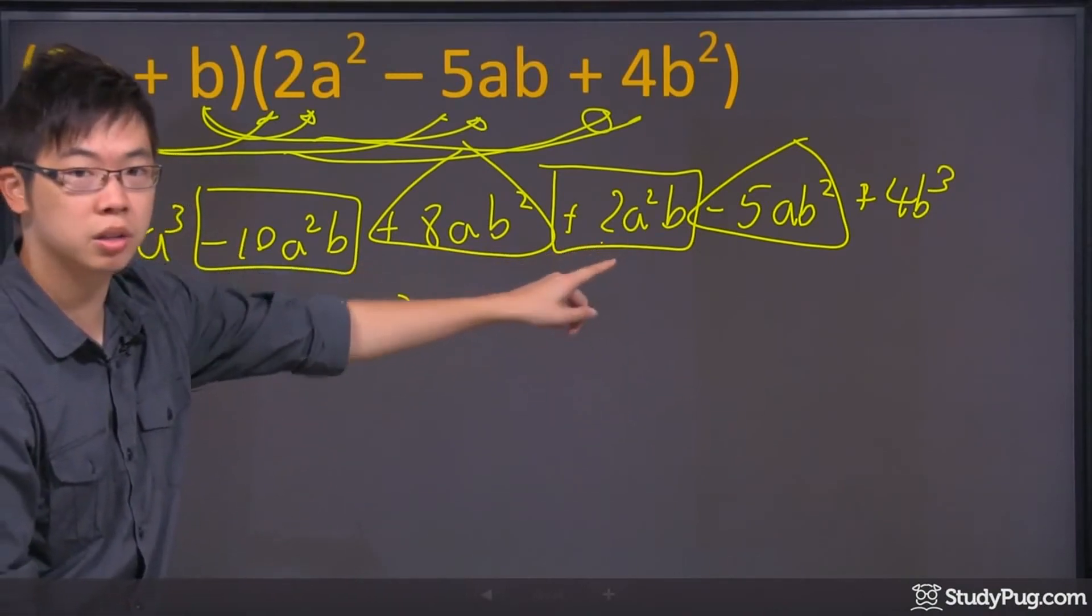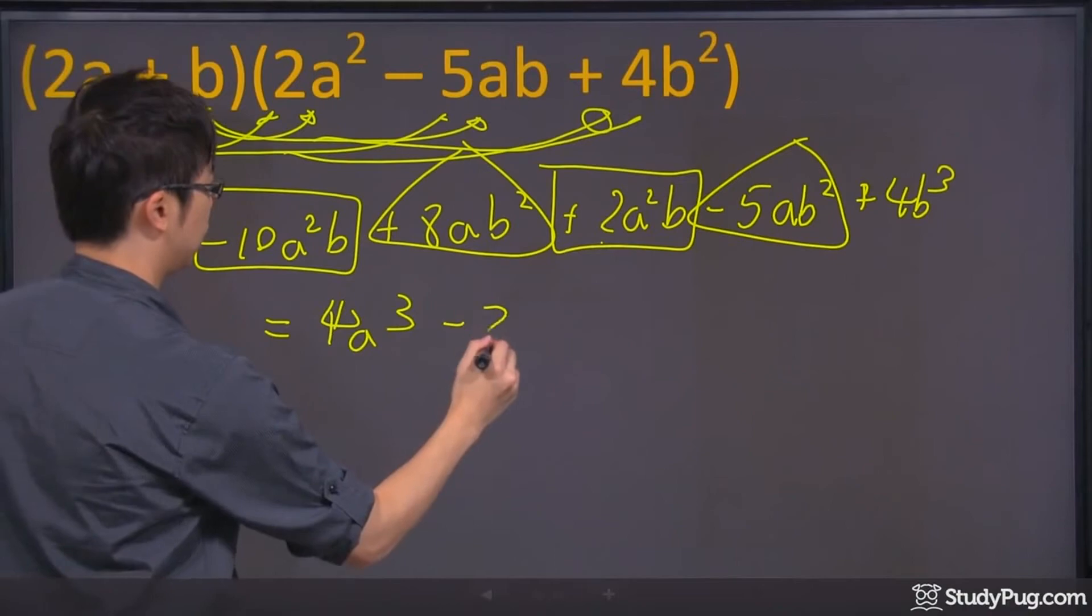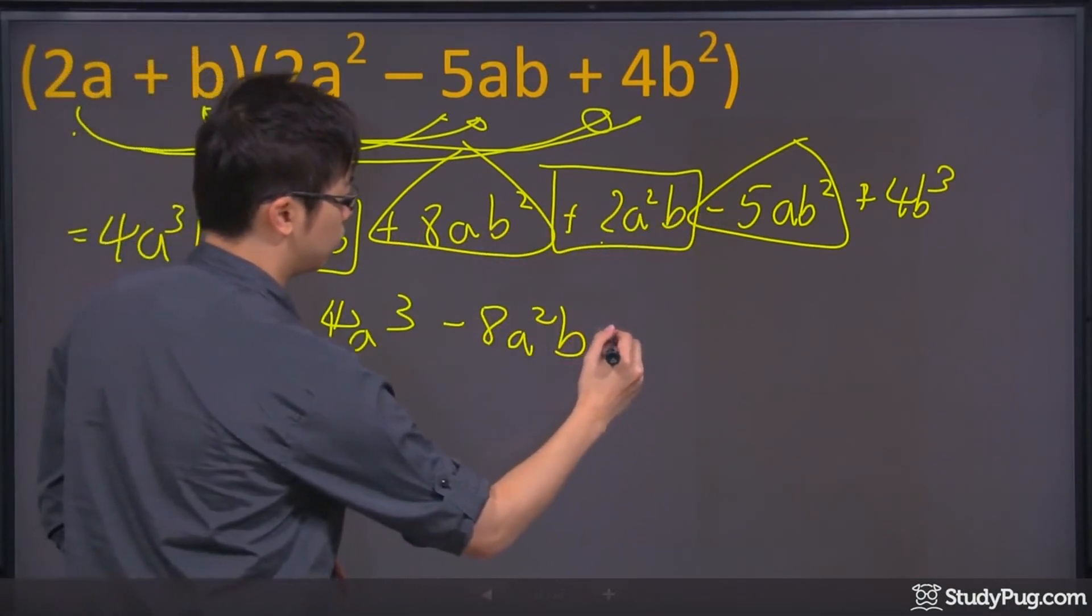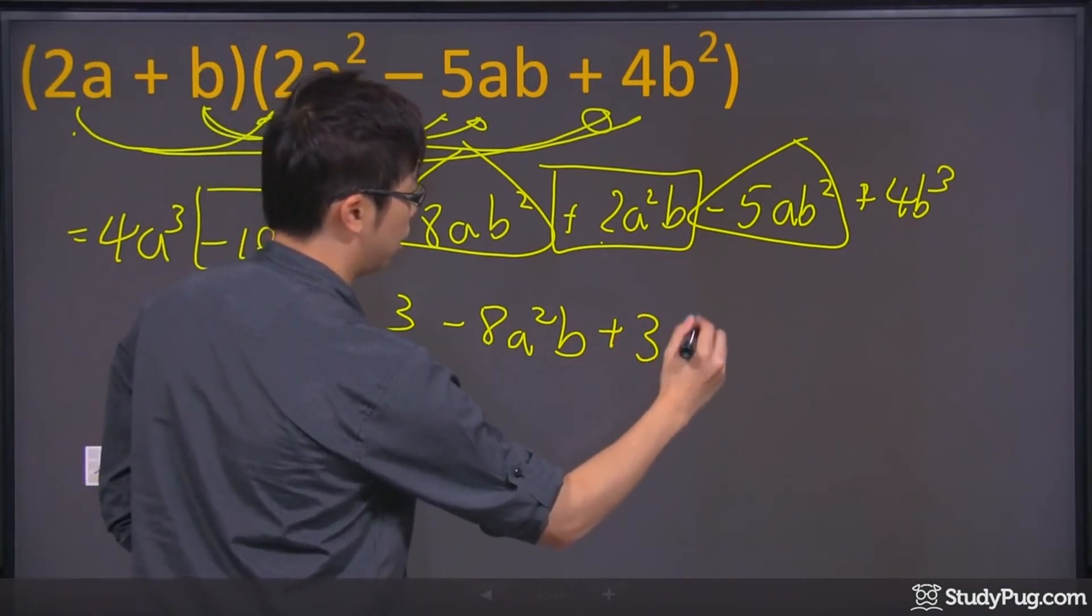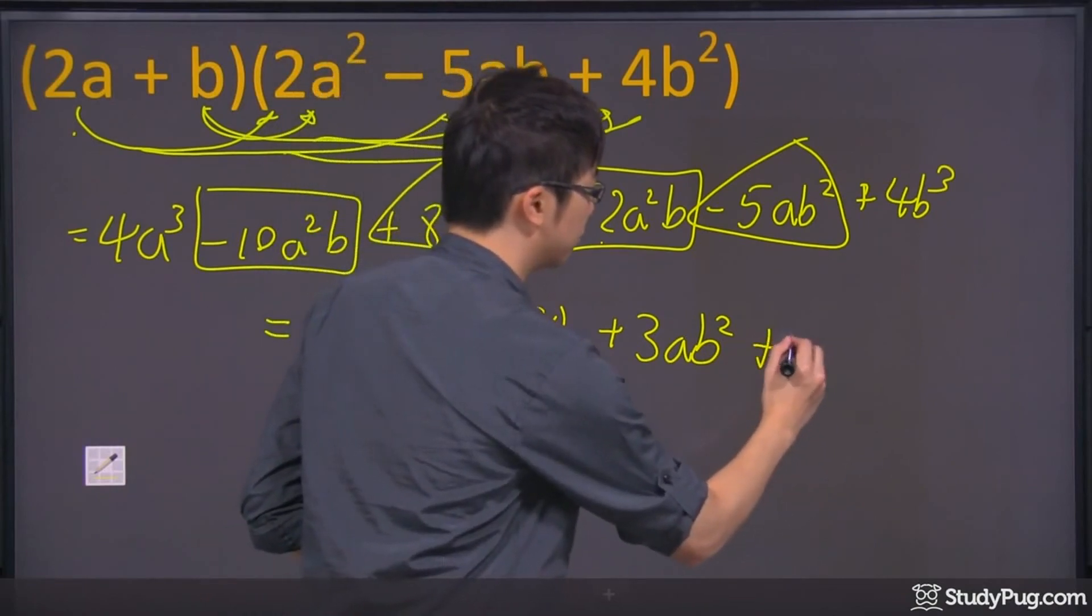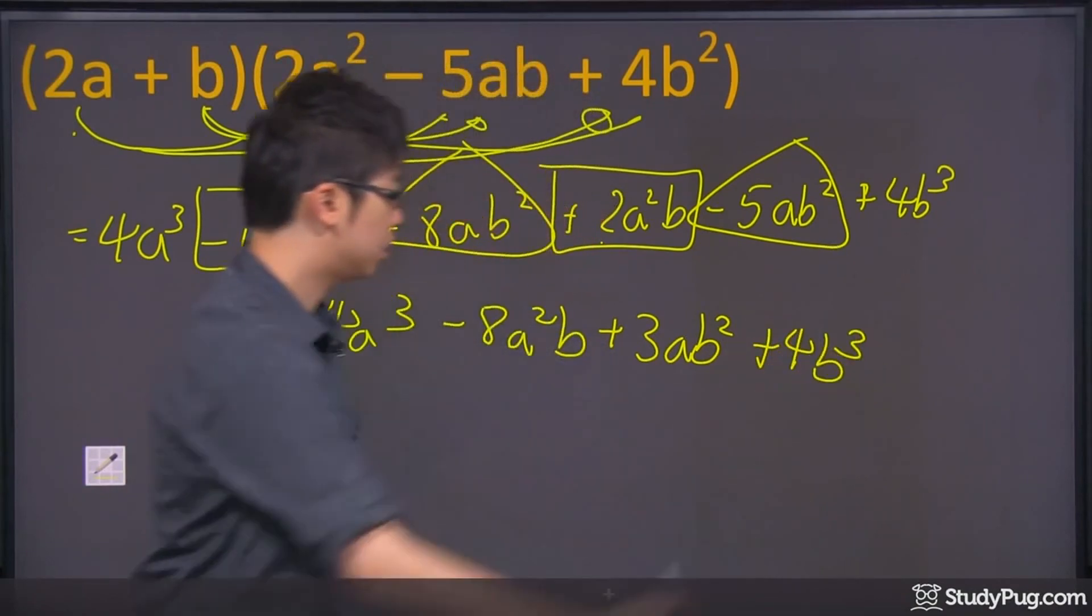So negative 10 and a positive 2 just gives you the negative 8a squared b. The 8 and the negative 5 is going to get you the 3ab squared, and last, we got a 4b cubed at the very end. And that is your final answer.